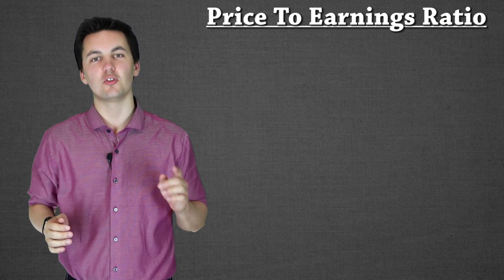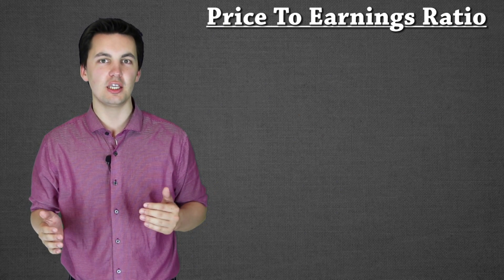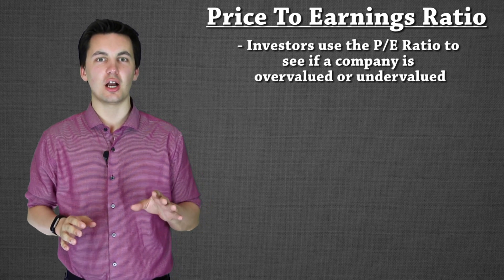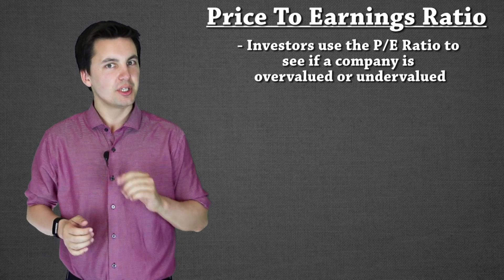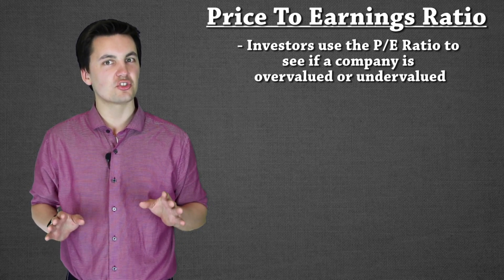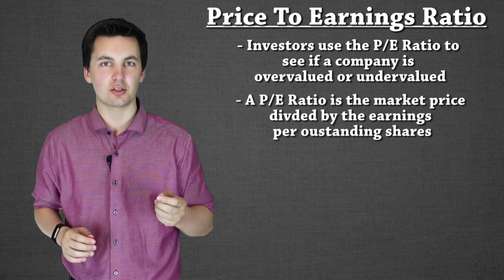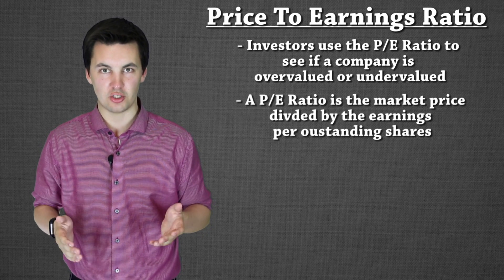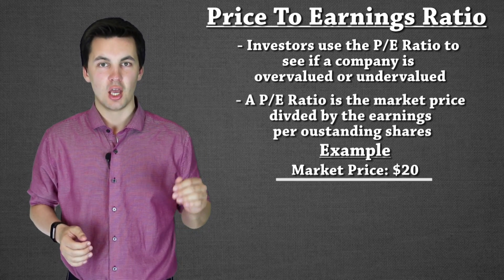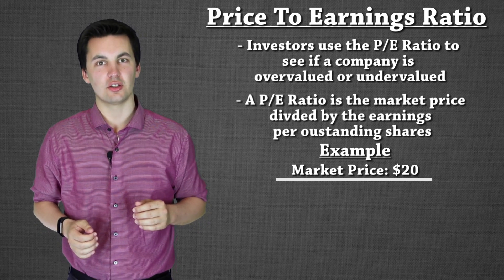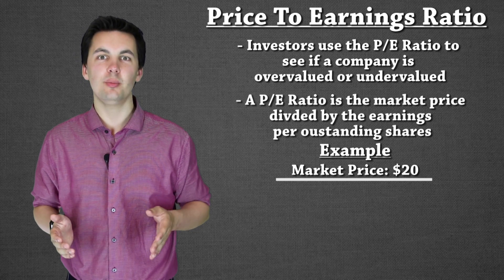The first thing we're going to talk about is P.E. ratios. These are really important because they show what people believe the company is worth. A P.E. ratio is a price-to-earnings ratio. What we're seeing here is a ratio — so what we would do is take our price of the stock, the current market price value. Let's say for this example it's $20; that's going to go on top. On the bottom we'll have our earnings, and it has to be our earnings per share. This can be a little bit tricky to find, but it isn't too bad.